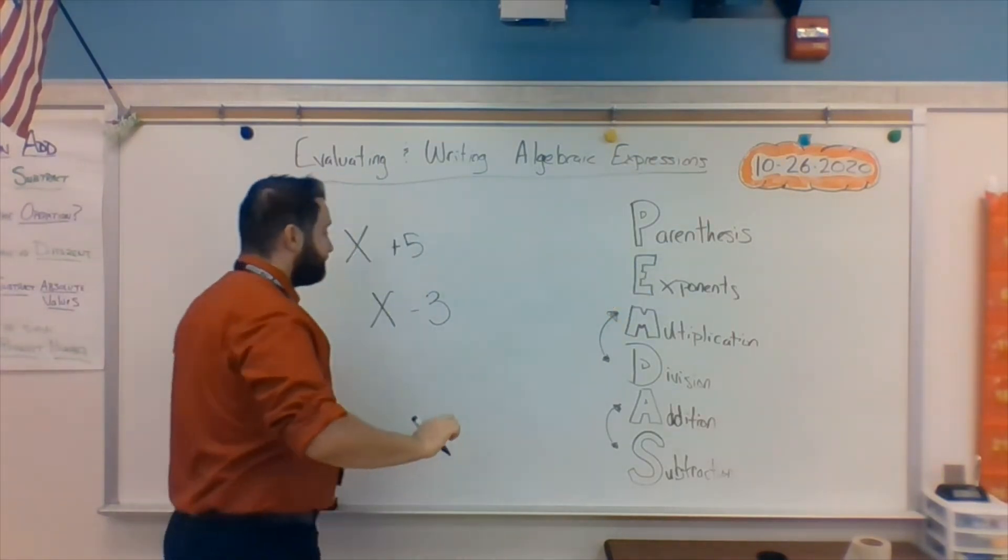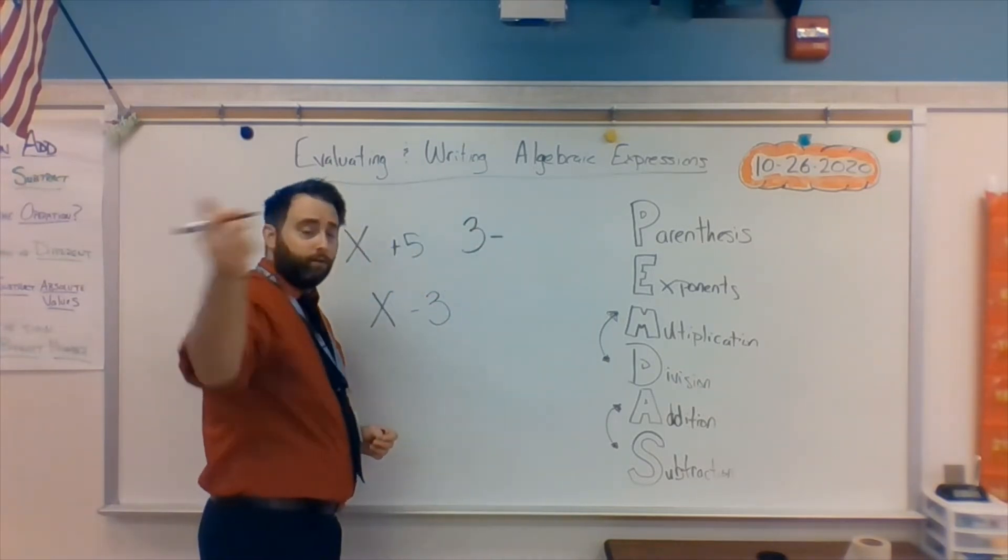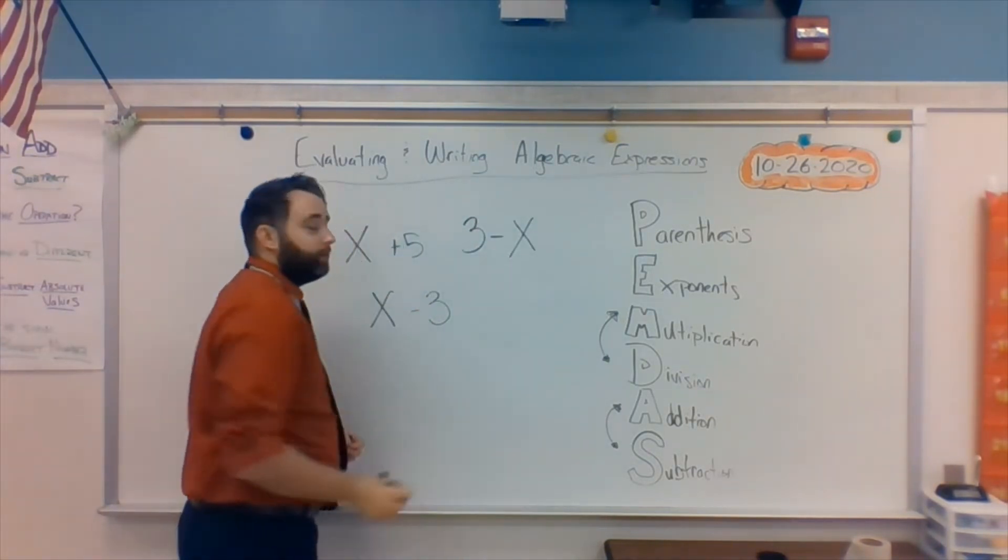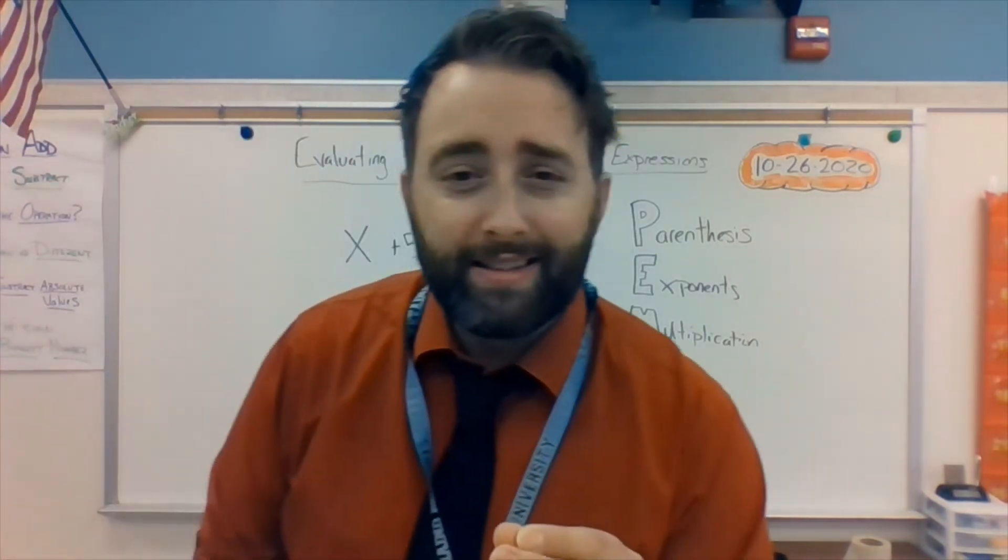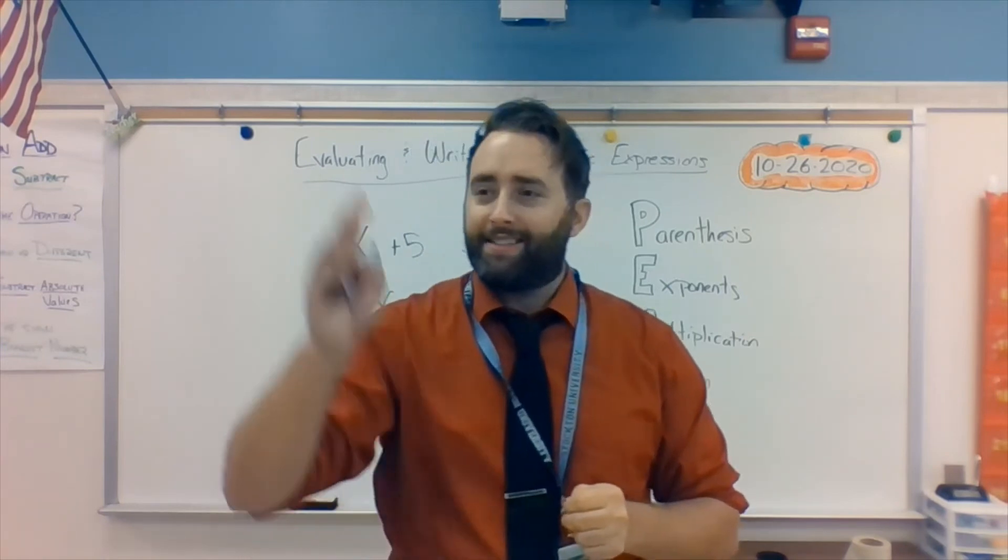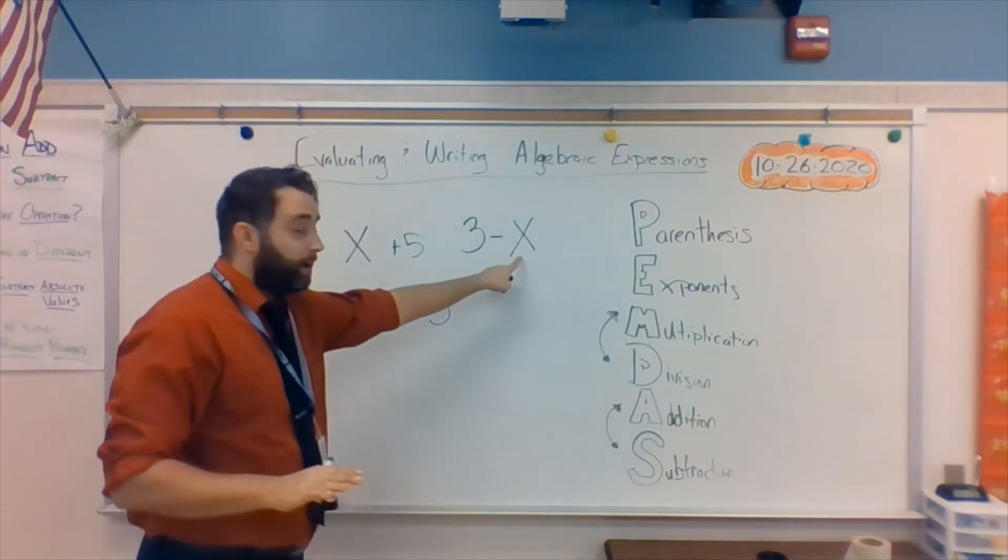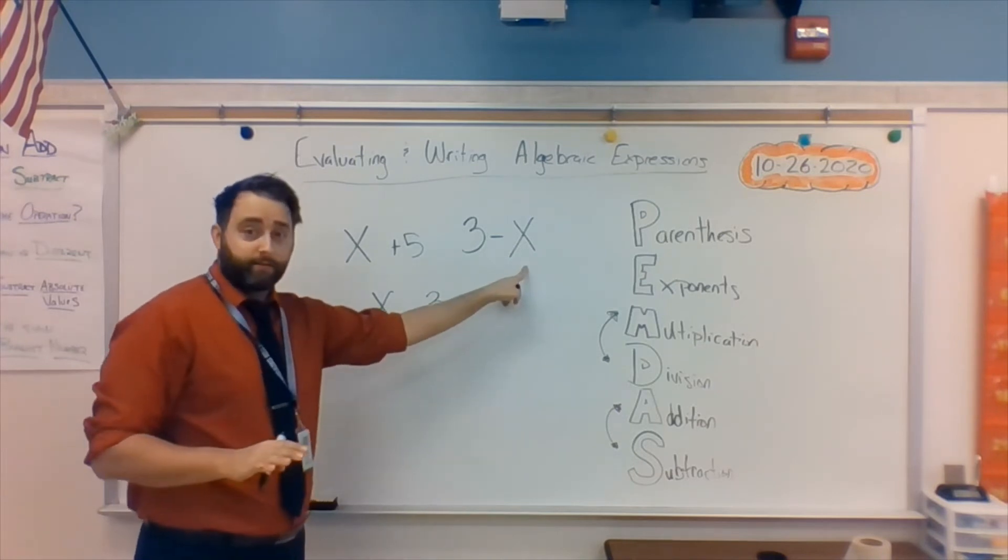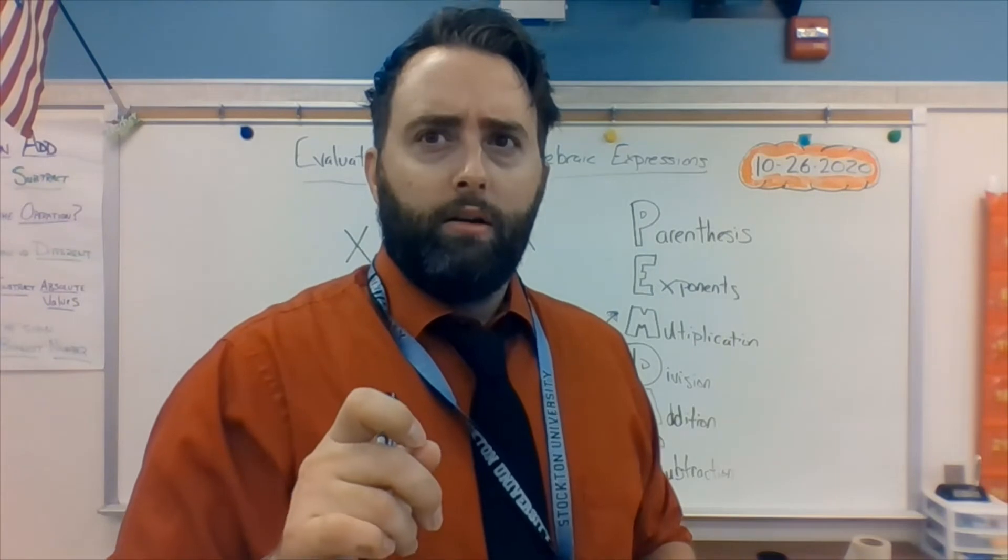Yours, Corey, is going to be 3 minus whatever Hasan's number is. It's very important to pay attention to that. How we phrase that. It's 3 minus x. It's x minus 3. It's not the same thing. That's whatever his number is going to be, it's now in different spots. Those are the easy ones. Let's move on.